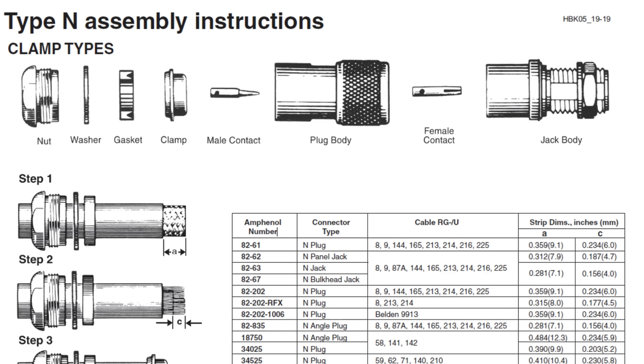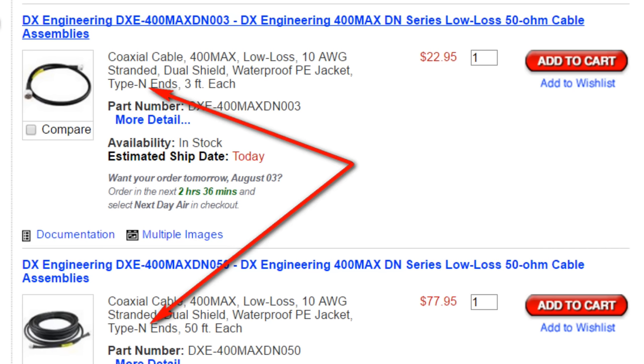To give you an idea of the complexity of the N connector, here are the assembly instructions found in the ARRL antenna book. Of course, you can order coax with N connectors already attached in a variety of lengths, as shown on the DX Engineering website.